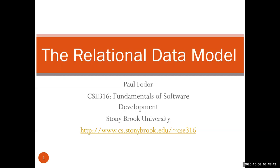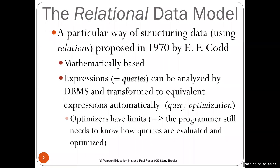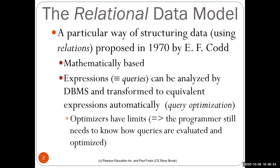Last time we talked about data models — they are a mathematical way to represent data that resides in a database. This particular way of structuring data, called relations, was proposed in 1970 by Ted Codd. He proposed these expressions because they can be automatically analyzed by a DBMS and transformed into equivalent expressions, which is important for query optimization.